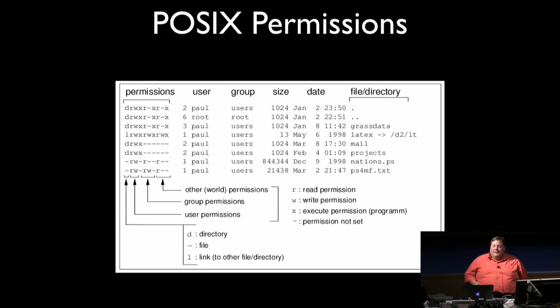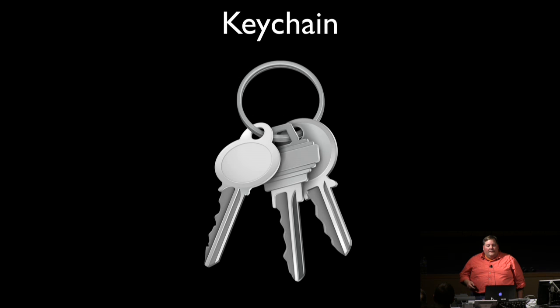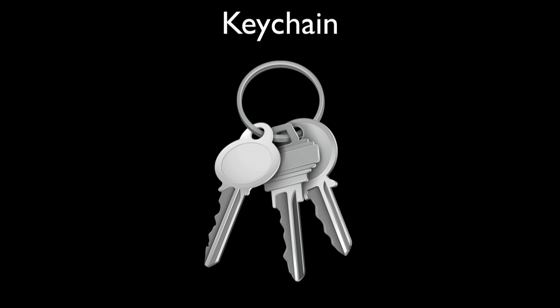The next layer of defenses is the Unix permissions model that OS X uses, which governs which users and groups can access which files and directories. If a user account requests access to a file or directory and does not have the necessary rights, that account is refused access. The innermost layer of defenses is keychains — specialized databases designed for storing secrets like passwords, private keys, and PIN numbers, and controlling access to those secrets. Keychains are encrypted, so if you don't know a keychain's password, you aren't getting into one.